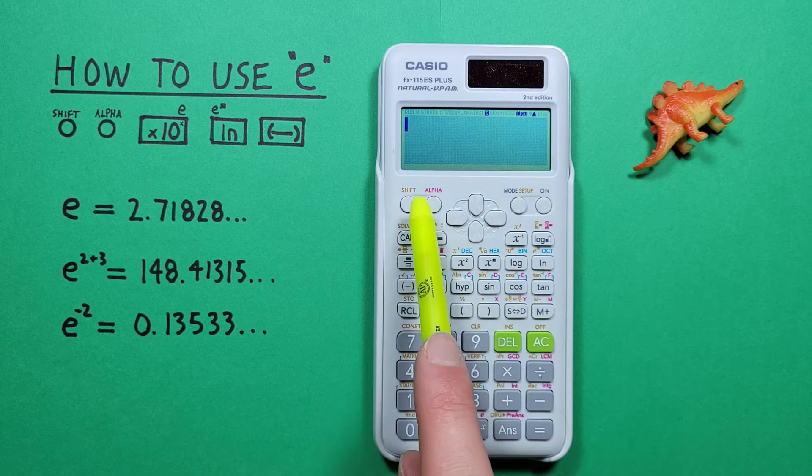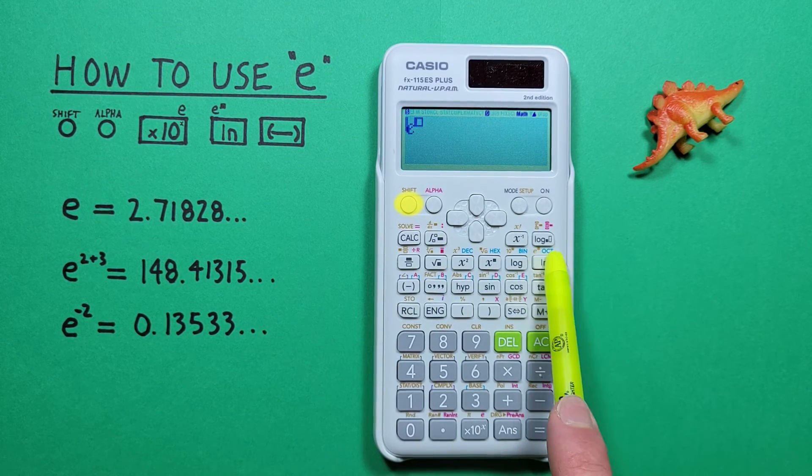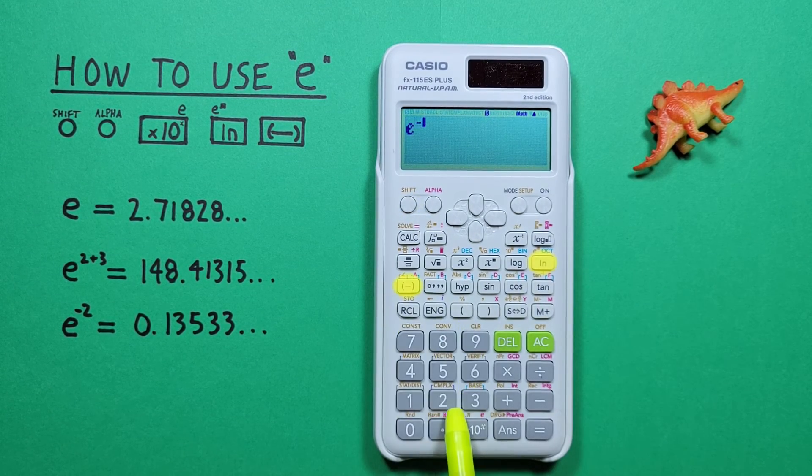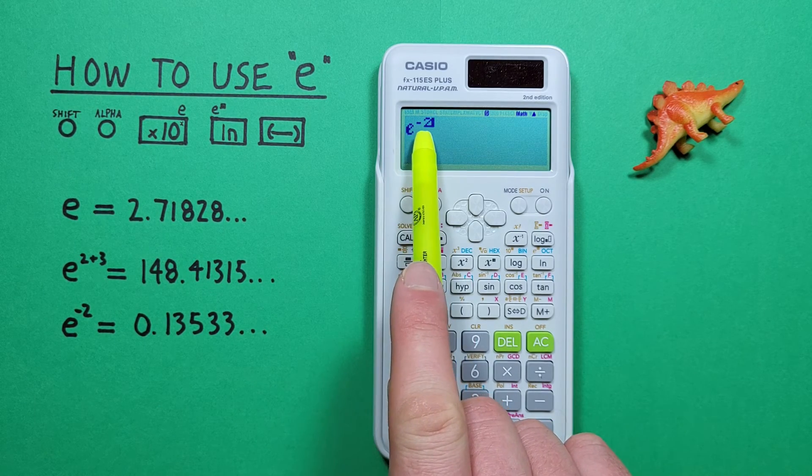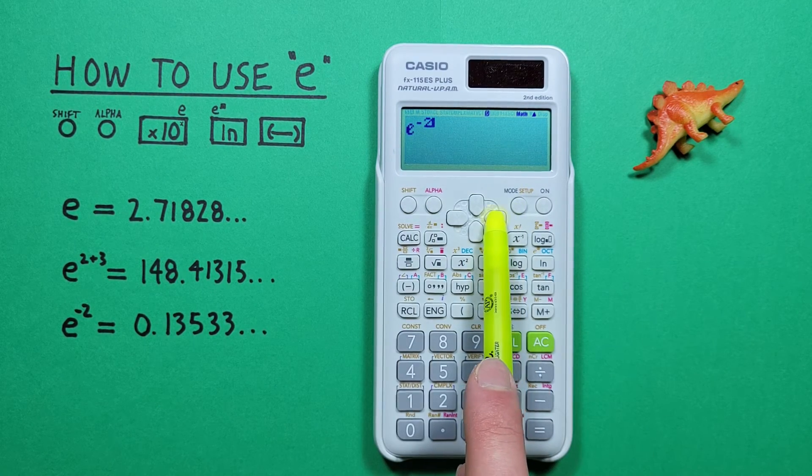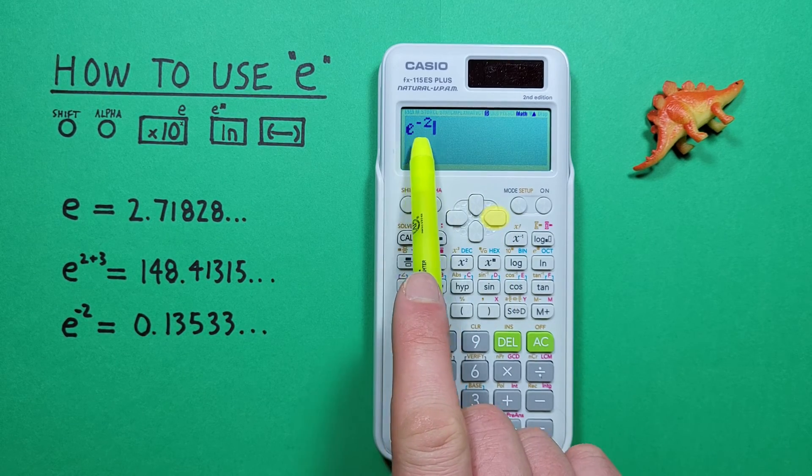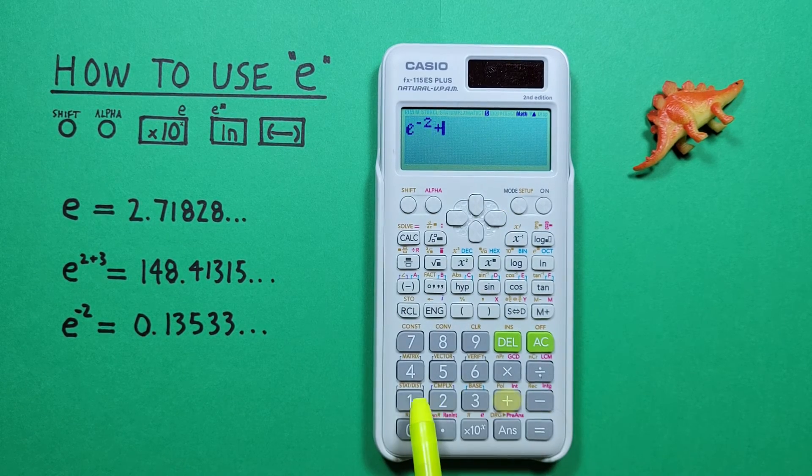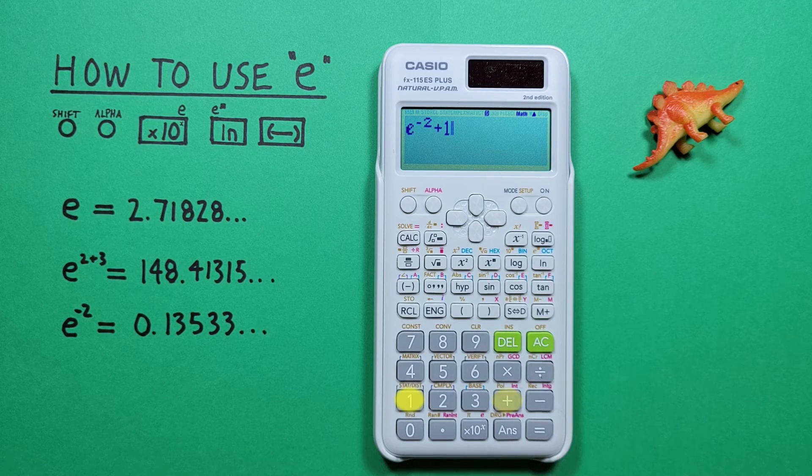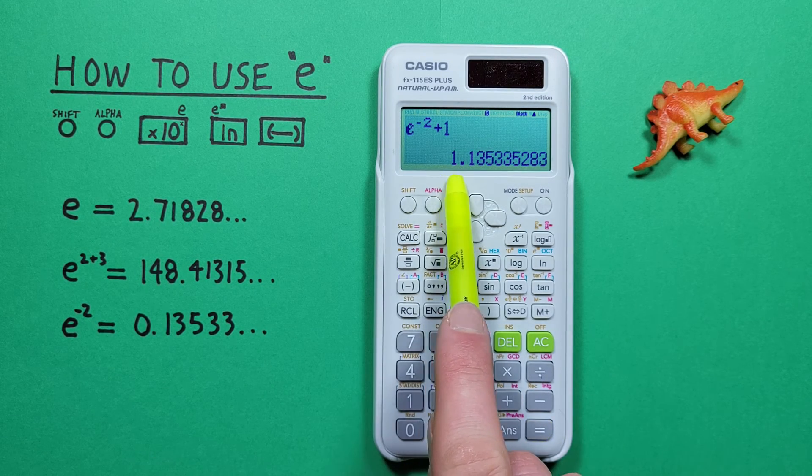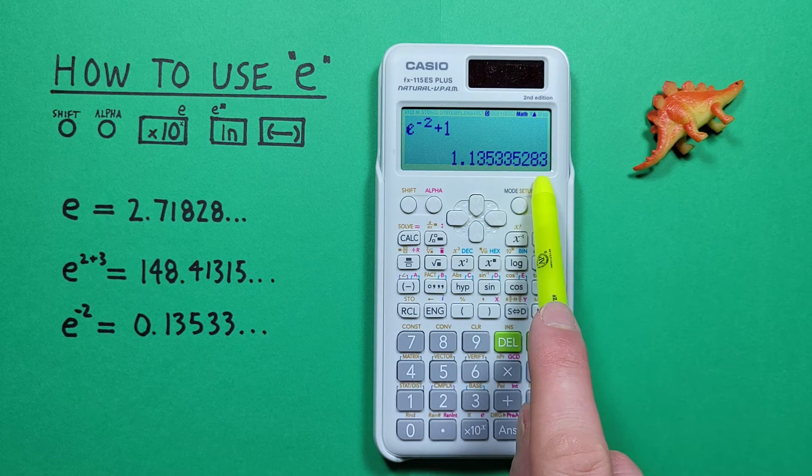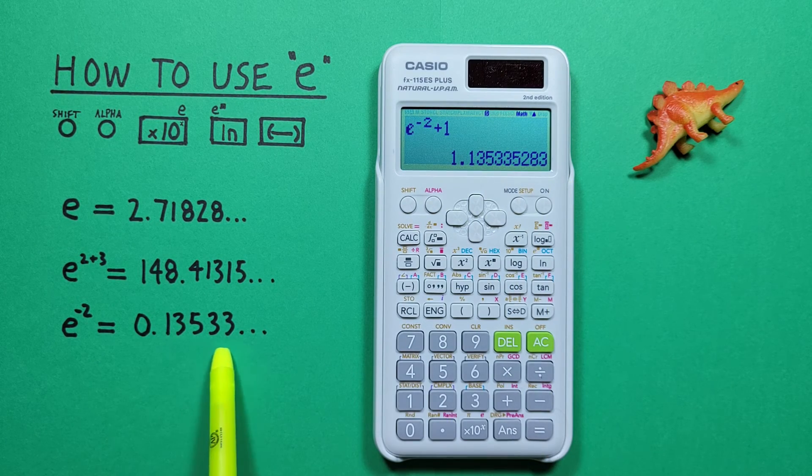To do that, we would do shift ln negative 2. Now if we just hit plus 1, it'll stay in the exponent, but if we use our arrow key to come down, our cursor is down here, and we can do our plus 1, press equals, and now we see we have 1.13533, etc., which would be correct.